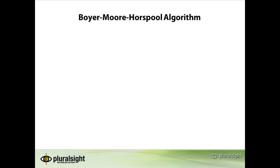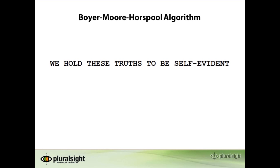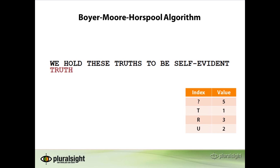In this example, we are going to use the Boyer-Moore Horspool algorithm to search for the word 'truth' in the phrase 'we hold these truths to be self-evident'. Previously, we saw how to build the bad match table for the word truth, and we will now be using that table. The algorithm starts by aligning the word truth to the start of the phrase. As mentioned earlier, the comparison is not done from left to right, but rather from right to left.